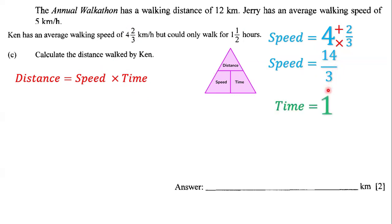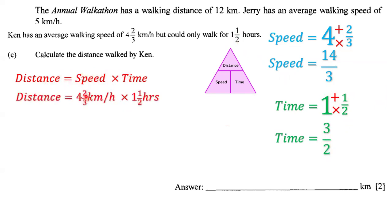Now let's look at the time. The time is 1 and a half hours. We'll convert this into an improper fraction as well: 1 times 2 is 2, plus 1 is 3, so we have 3 over 2 hours. So the distance equals speed times time — that's 4 and 2 over 3 (which is 14 over 3) multiplied by 1 and 1 over 2 (which is 3 over 2). So we have 14 over 3 multiplied by 3 over 2.